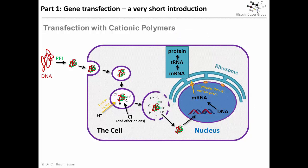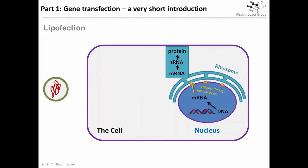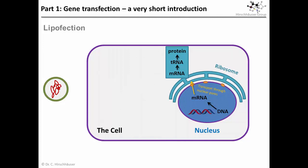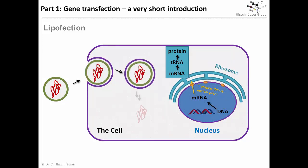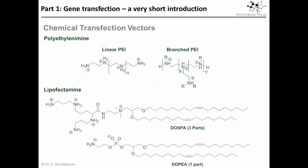But endocytosis is not the only mechanism by which a vector can work. For example, cationic lipids can be used to form protective vesicles around DNA molecules. They can either be engulfed as a whole or fused with the cellular membrane and thereby release their cargo into the cell. This process is called lipofection and it is the basis for another prominent transfection vector called lipofectamine, which is actually not a single compound but rather a mix of two cationic lipids.